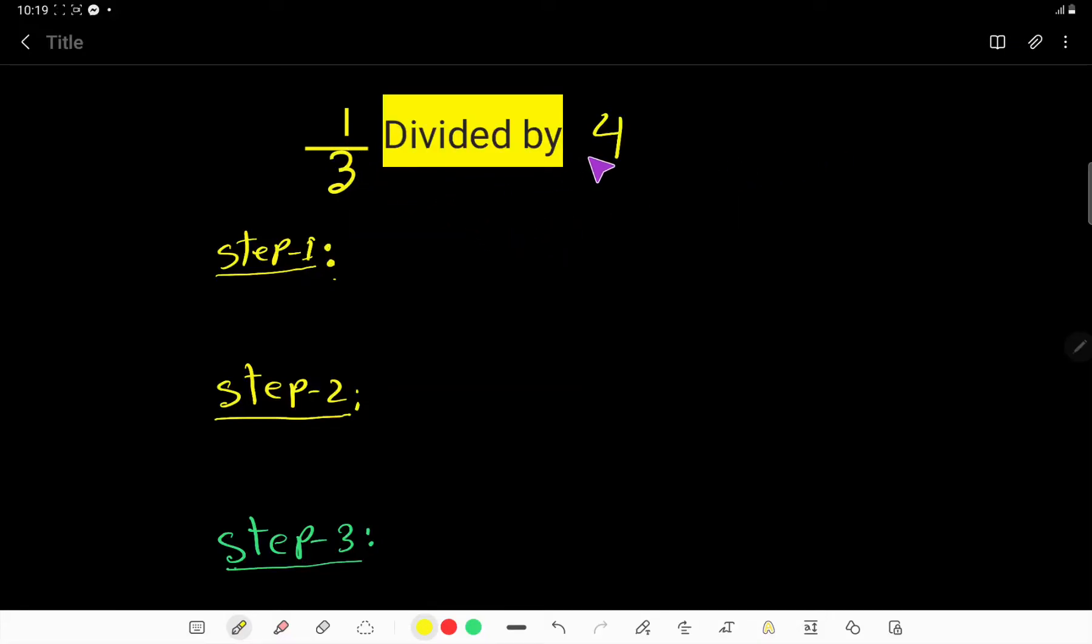One over three divided by four. In the first step, we have to write this expression with the division sign. Then we have four. In the second step, we'll...